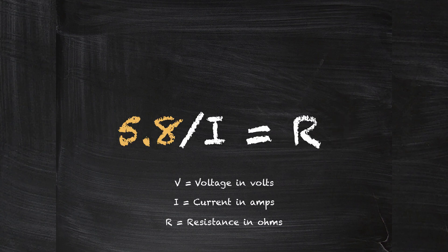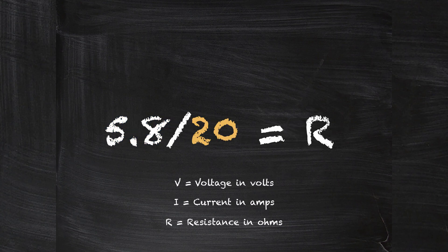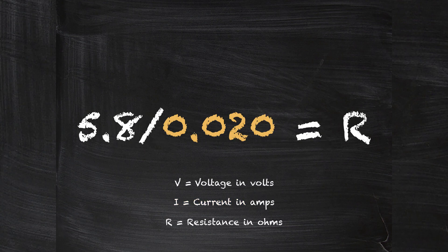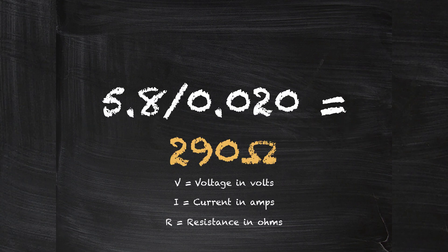We're going to divide that by the current, which is 20 milliamps, so put 20 in there, right? Well, not quite. Current is measured in amps, so we're going to have to put in 0.02 to actually get an accurate calculation. So we do the math, and that gives us 290 ohms for our resistance value.